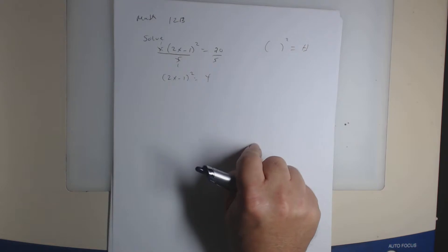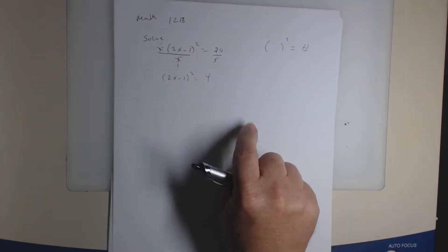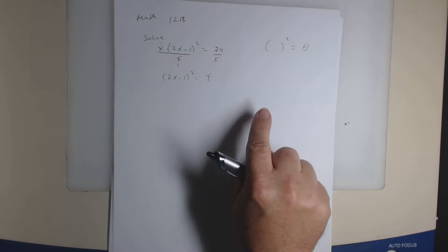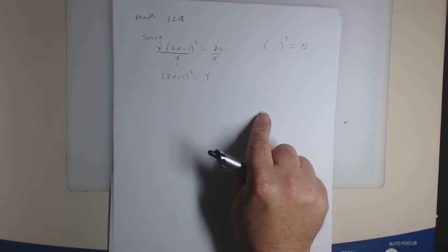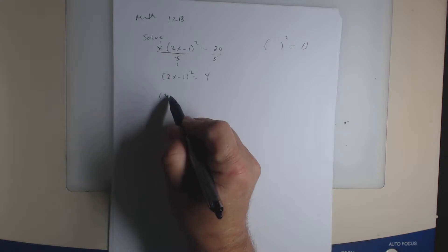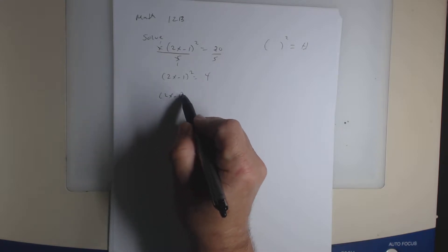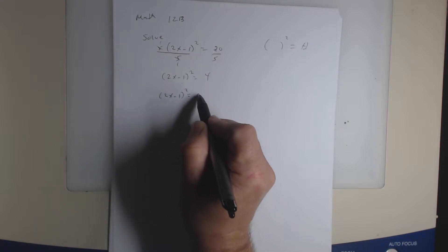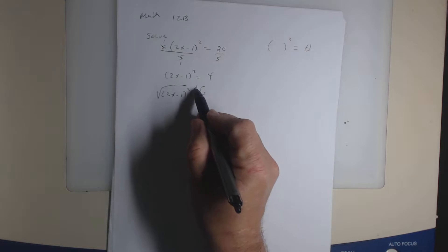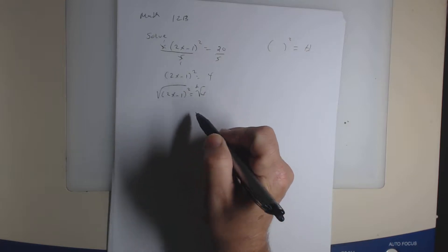Now that looks like this — some expression squared equal a number. Once it looks like that, what's the next property we're going to use? The square root property. So you're going to take the square root of both sides. I'll go ahead and rewrite this and take the square root of both sides.